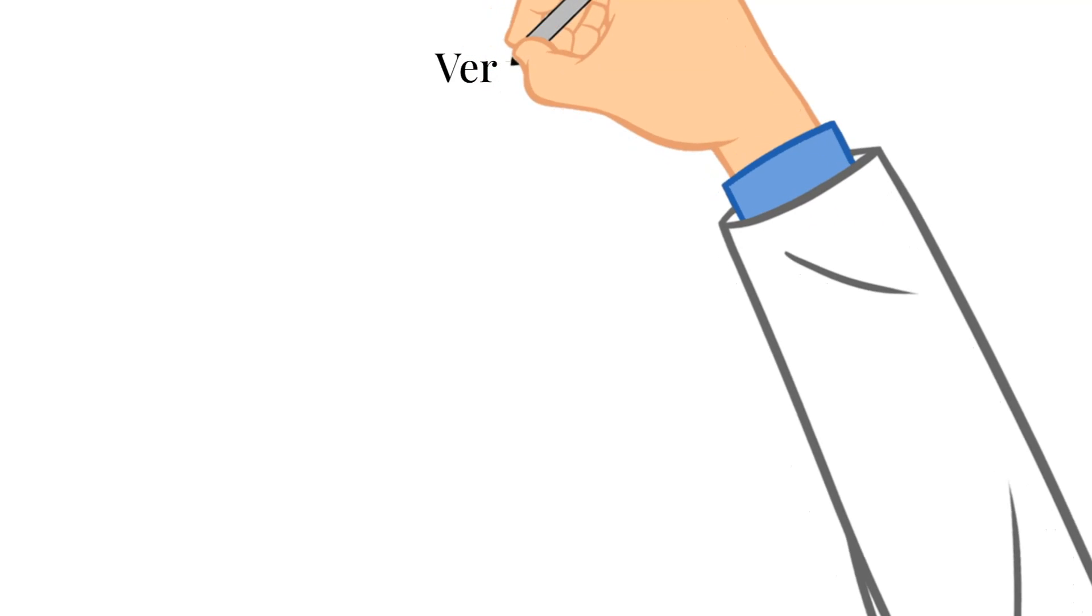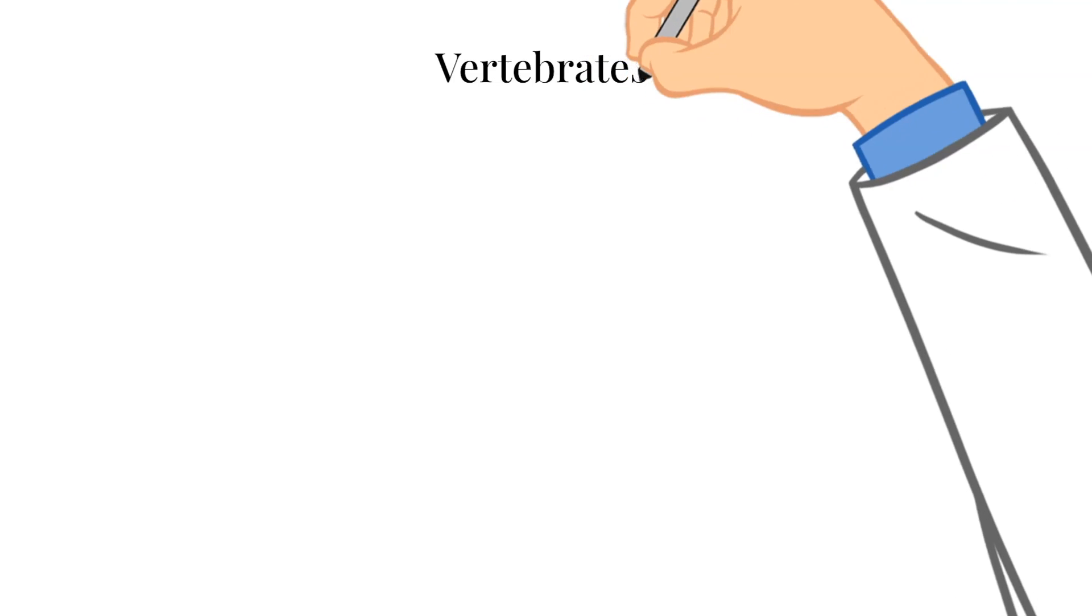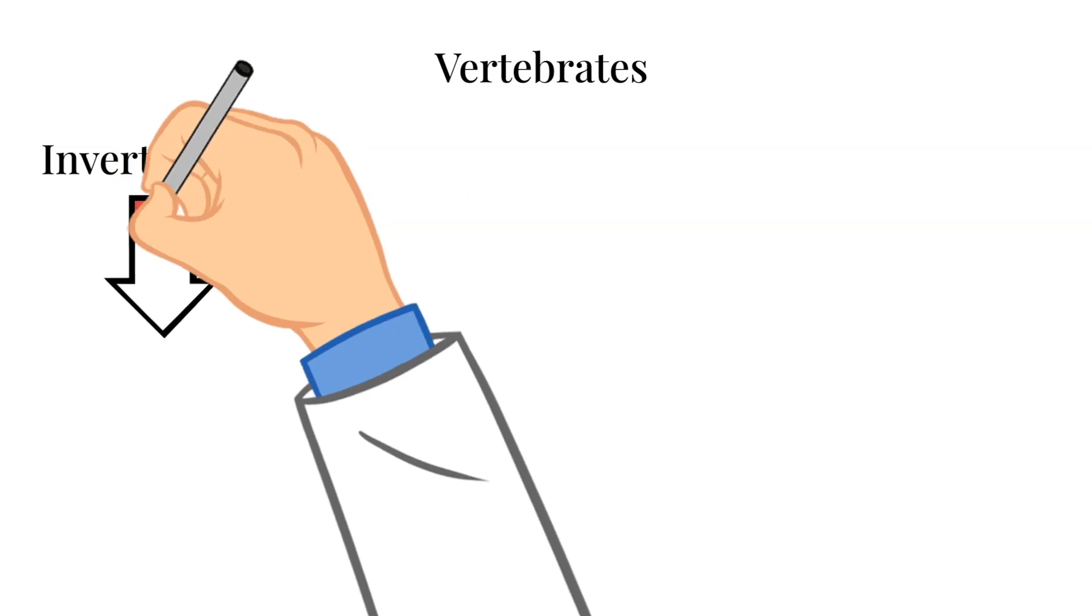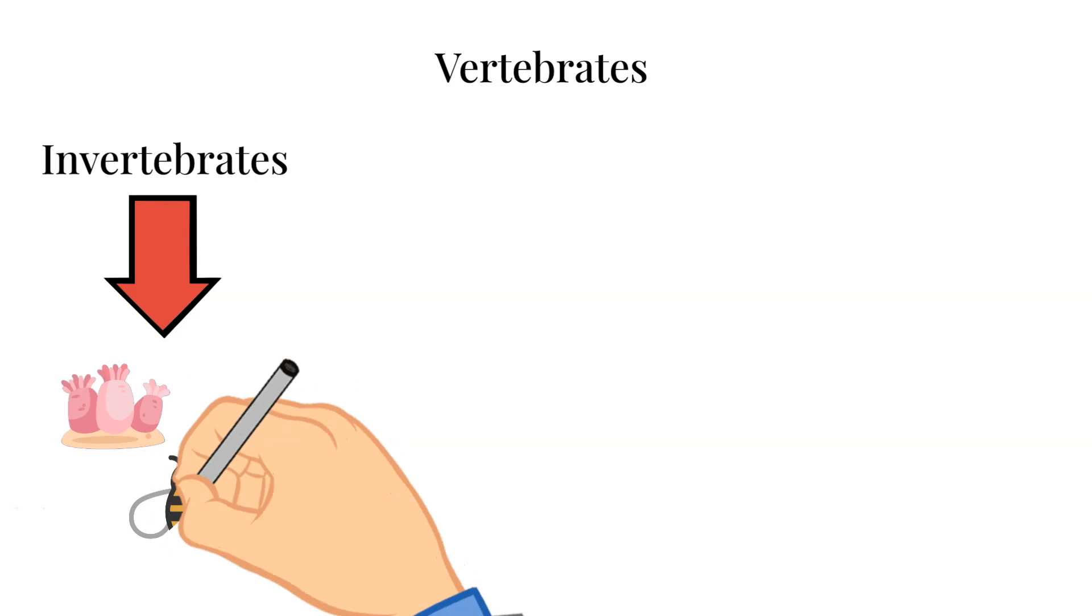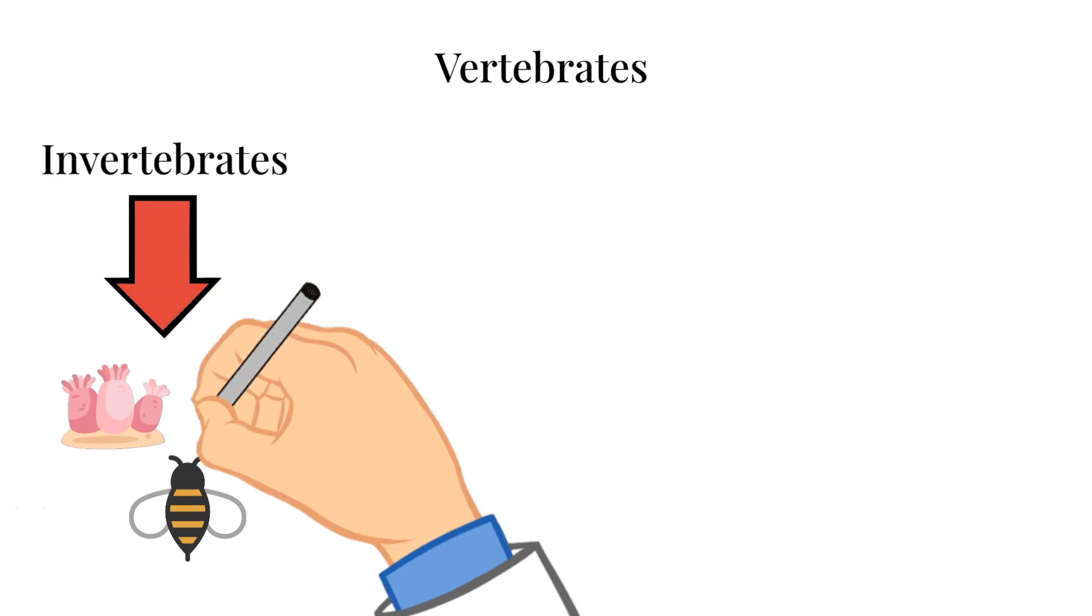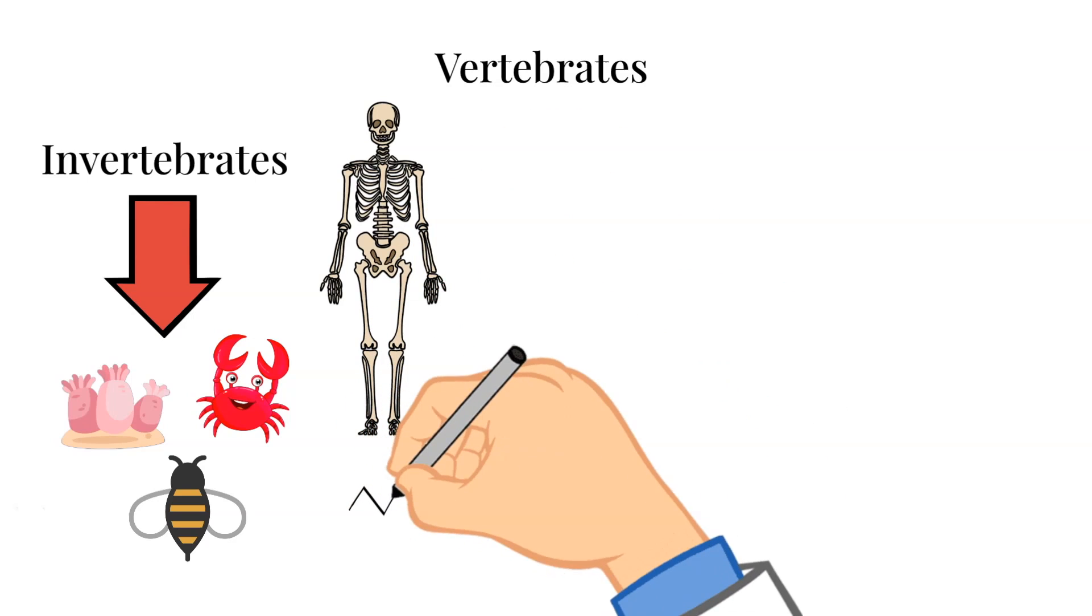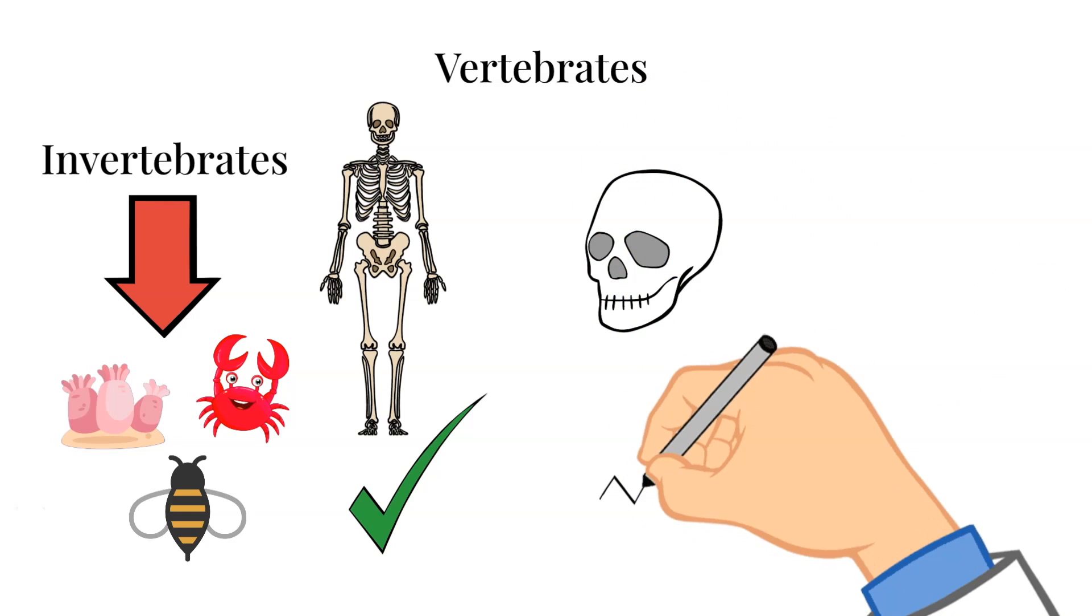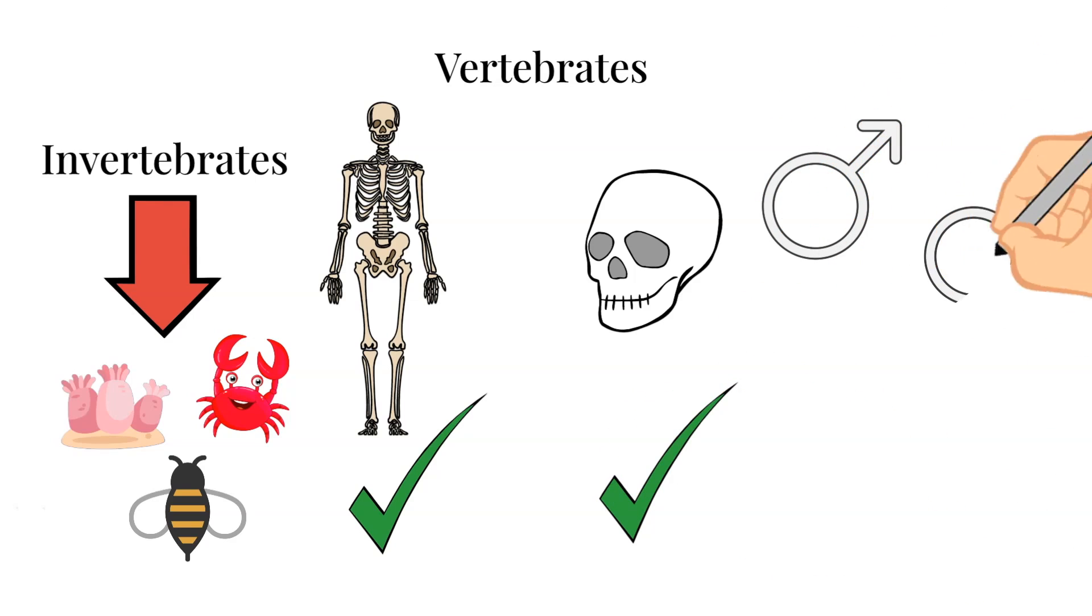Today we're going to be talking about the five major groups of vertebrates. And why are they all considered vertebrates? What is a vertebrate? If you remember last week, we talked about how invertebrates do not have a backbone. Similarly, vertebrates are animals that do have a backbone. All vertebrates have some things in common. One of them being that hollow backbone. Another one being that they have a skull or cranium, which protects the brain. Another important characteristic is that all vertebrates reproduce by mating between males and females.